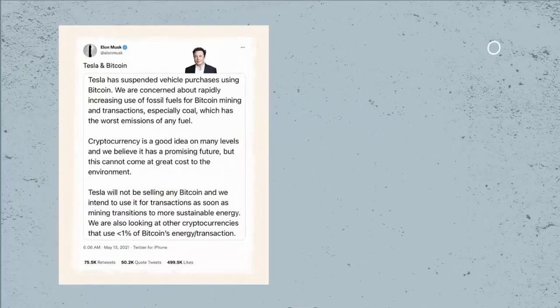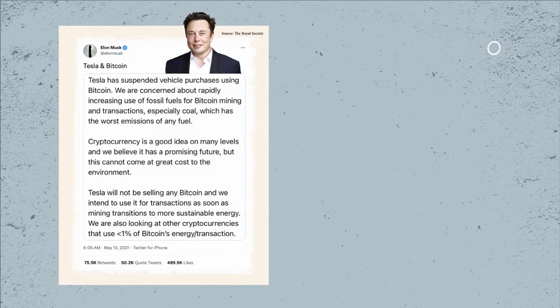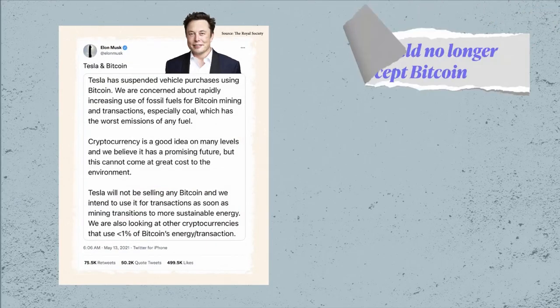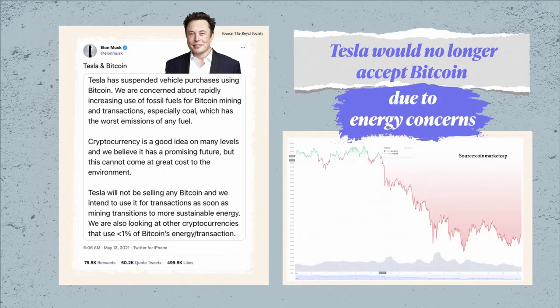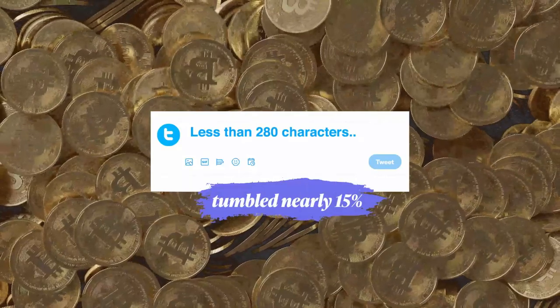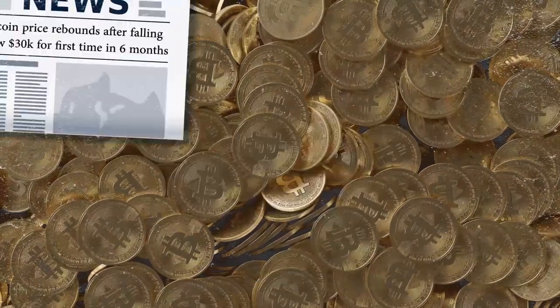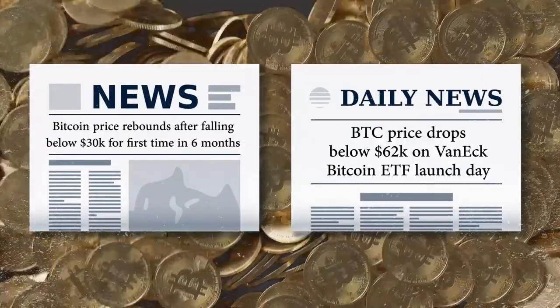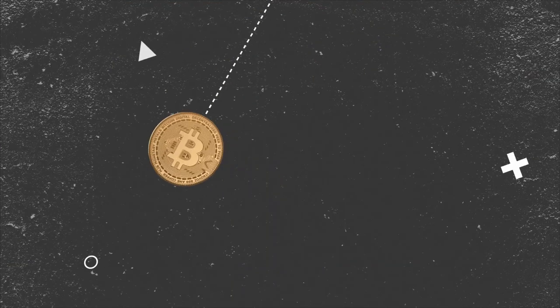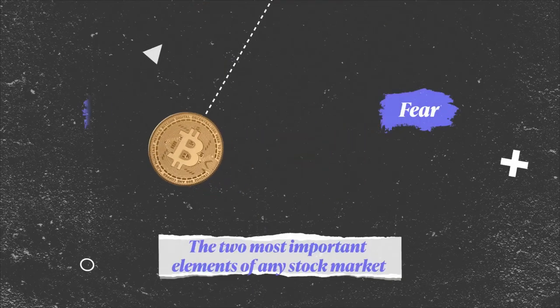A good example is Elon Musk's tweet from early May of 2021 saying Tesla would no longer accept Bitcoin due to energy concerns. And in less than 280 characters, Bitcoin tumbled nearly 15%. Depending on the nature of the news, fear or greed could be incited among traders, the two most important elements of any stock market.